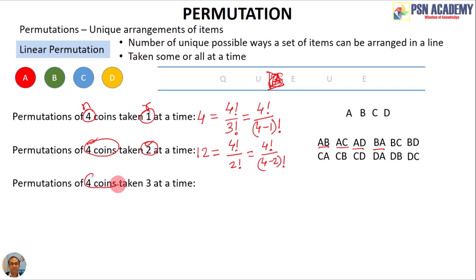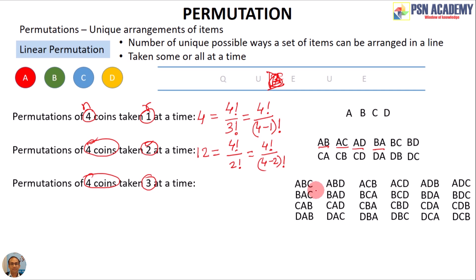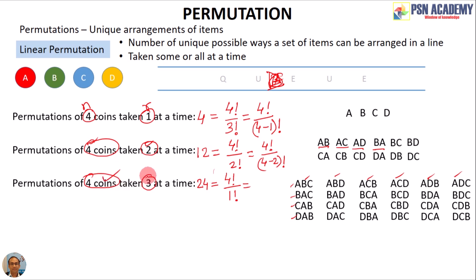Next, take 3 coins at a time from 4 coins. Listing all arrangements, we get 24 total (8 groups of 3 on each side: 4+4 rows of 3, totaling 24). In factorial form this is 4!/1! = 24. With n=4 and r=3, we replace 1 with (4−3), giving 4!/(4−3)!.